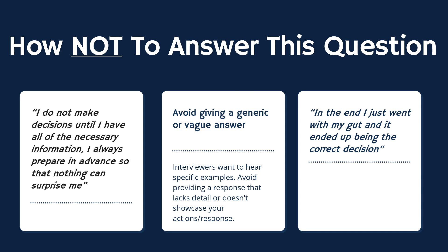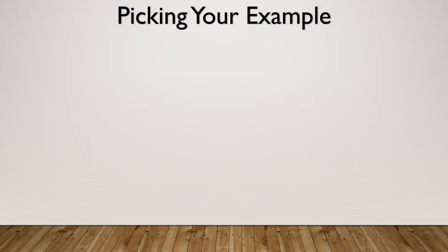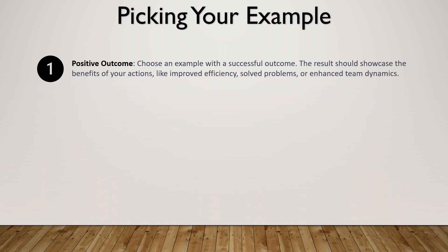Next, let's delve into selecting the most effective example to use in your answer. Think about the following points when coming up with stories from your experience. First, your answer should have a positive outcome. Choose an example with a successful result that showcases the benefits of your actions, such as improved efficiency, solved problems, or enhanced team dynamics. It's fine to mention lessons learned and how you'd improve in the future, but the underlying situation should be resolved successfully.